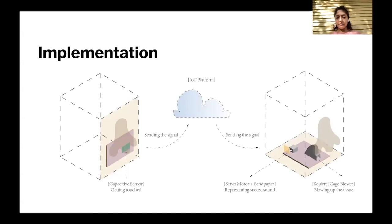The device consists of a nose protruding from its front surface along with a feather made of conductive thread. A tissue hangs below the nose and covers a small opening in the box leading to a blower, capacitive sensor, servo motor, and microcontroller.